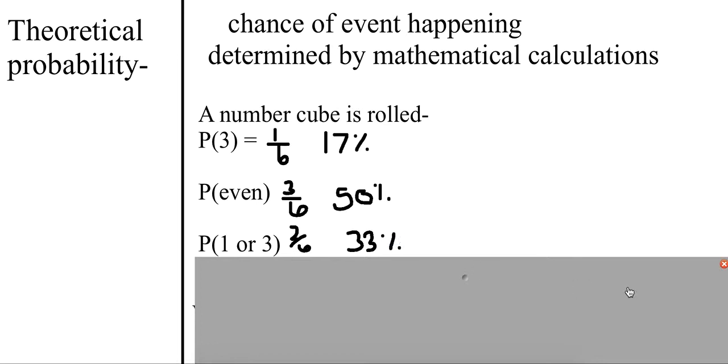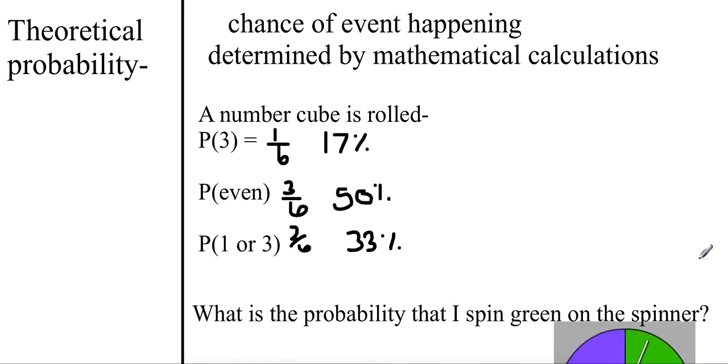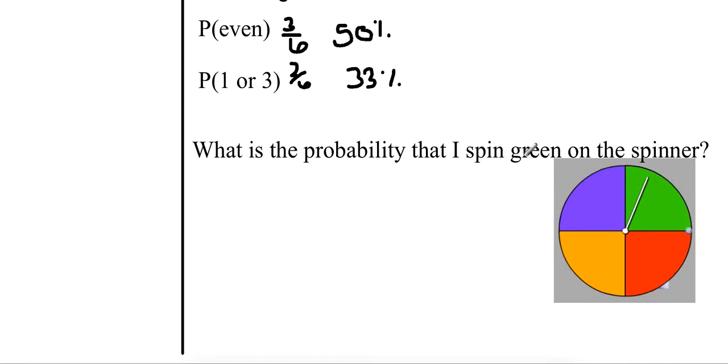So let's look at something different besides a number cube. Here's a spinner. What is the probability that I spin green on the spinner? There are 4 possible outcomes. One of them is green, so I have a 1 out of 4 chance, which would be 25%.